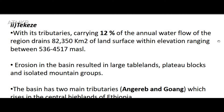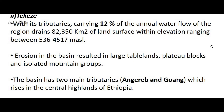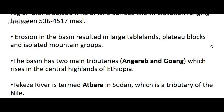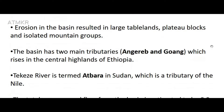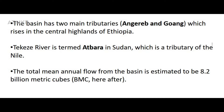The Takiz River, with its tributaries, carries 12% of the annual water flow of the region and drains 82,350 square kilometers of land surface within an elevation ranging between 536 and 4,517 meters above sea level. Mass erosion in the basin has resulted in large tablelands, plateau blocks, and isolated mountain groups. The basin has two main tributaries: Angereb and Gon, which rise in the central highlands of Ethiopia. Takiz River terminates at Bahrain, Sudan, as a tributary of the Nile. The total mean annual flow from the basin is estimated to be 8.2 billion cubic meters.